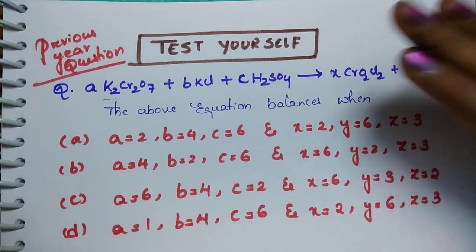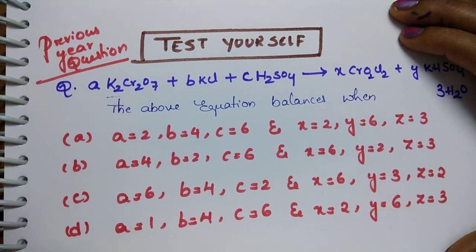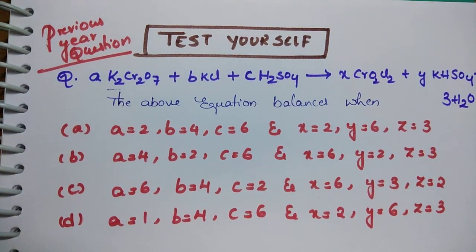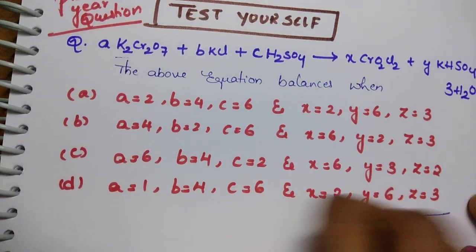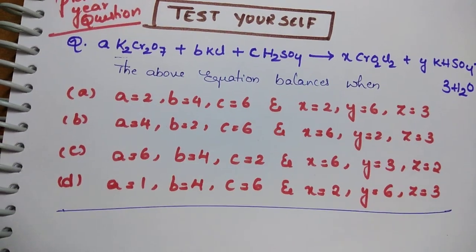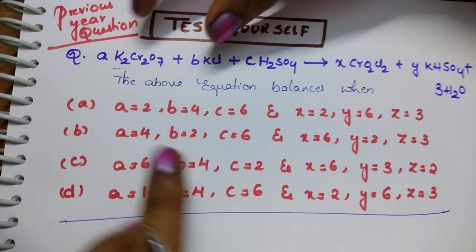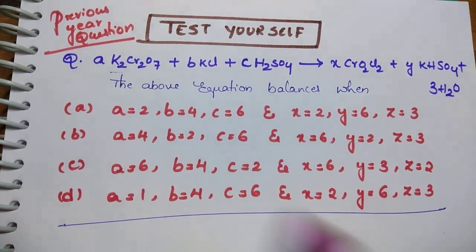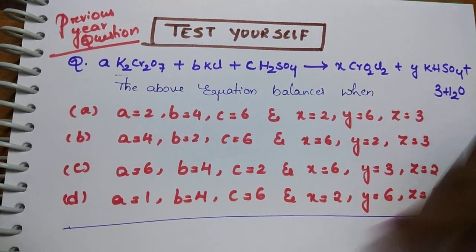This is the reaction. What you have to do is balance this and choose the correct option. Now what is your trick? You have to balance the charge on both the sides. So for that, what you do is convert this into ionic form first, it will be easy.